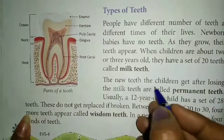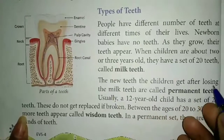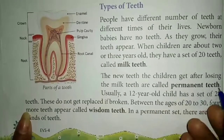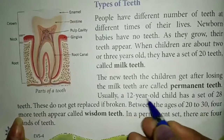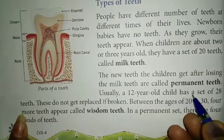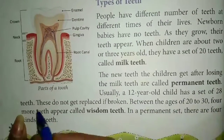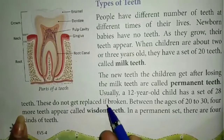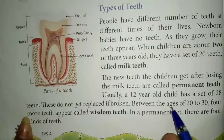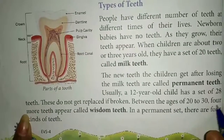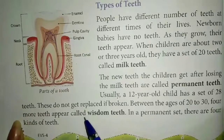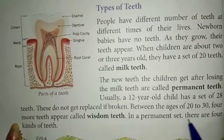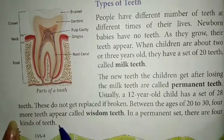The new teeth that children get after losing their milk teeth are called permanent teeth. Usually a 12-year-old child has a set of 28 teeth. These do not get replaced if broken. Between the ages of 20 to 34, more teeth appear called wisdom teeth. In a permanent set there are 4 kinds of teeth.